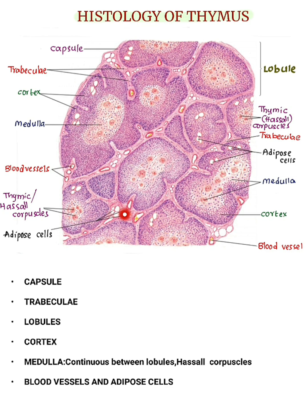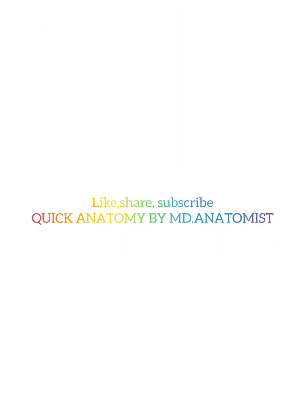Blood vessels and adipose cells are present in both thymic lobules and trabeculae.